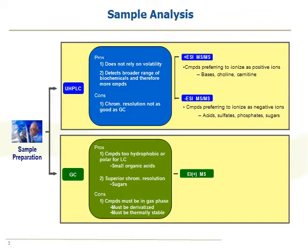The LC-MS is further split into two separate analyses. We have one injection optimized for molecules that prefer to form positive ions — so the bases, choline, carnitines, these types of molecules — run in acidic conditions. We also have a separate injection optimized for small molecules that prefer to form negative ions in basic conditions. These are acids, sulfates, phosphates, sugars, these types of molecules.